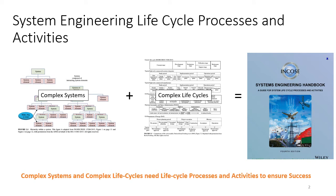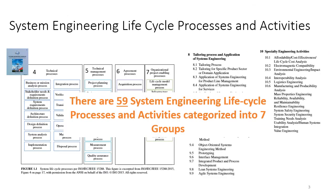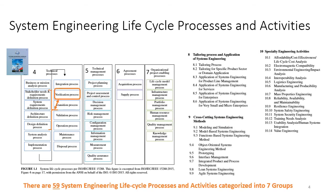The System Engineering Handbook codifies over a hundred years of wisdom of how to build, test, and field systems. These activities and processes are required because we're building complex systems and complex life cycles. Altogether, there are 59 System Engineering life cycle processes and activities categorized into seven groups. This video is part of the technical processes group, specifically the verification process.